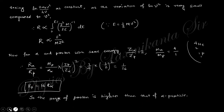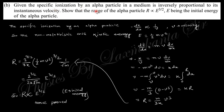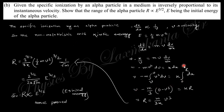The next part states that specific ionization by an alpha particle is inversely proportional to the square of its velocity: −dE/dx ∝ 1/v². We need to show that the range R ∝ E^(3/2). Starting from the relation, substituting and integrating from initial velocity v₀ to zero velocity (at stopping range), we find that the range R is proportional to E^(3/2).